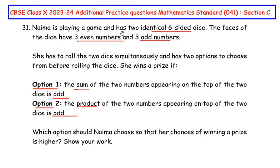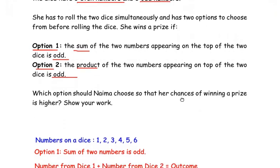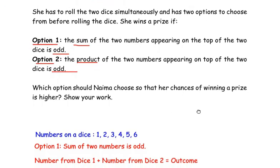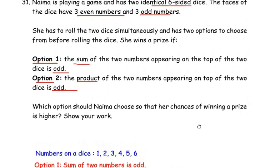Let us see what numbers are present on a dice first. As mentioned in the question, it has three even numbers and three odd numbers. So we have 2, 4, and 6 as the even numbers, and 1, 3, and 5 as the odd numbers.